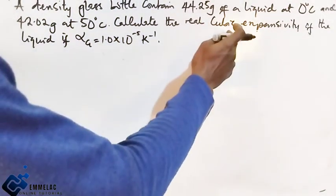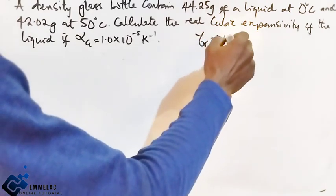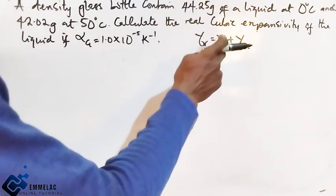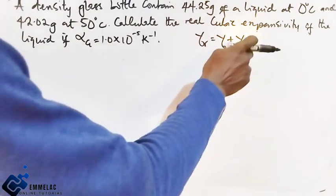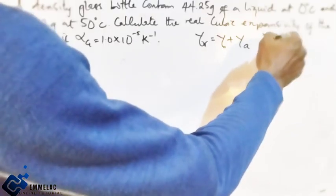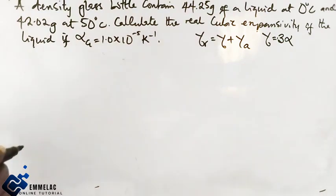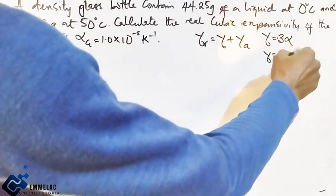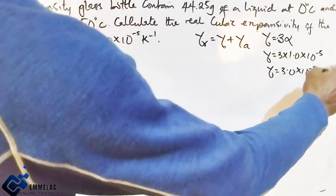Here we have a formula for the real cubic expansivity. The real cubic expansivity equals the apparent cubic expansivity plus the cubic expansivity of the container. So let us find the cubic expansivity of glass first. We know that the formula is γ_g = 3α, where α is our linear expansivity. So we have 3 times 1.0×10^-5, which equals 3.0×10^-5 per Kelvin.